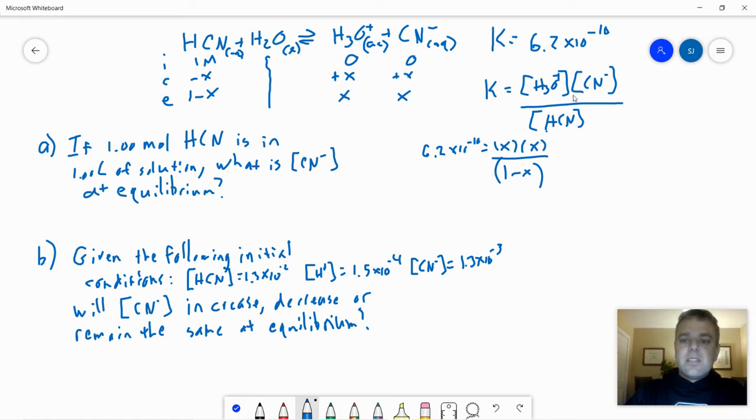So if we take a look at this, otherwise solving this equation could be a little bit complex. It would involve the quadratic equation. But since this is not going to go very far towards the product side because this constant is very small, then right here where we have 1 minus X, X is small. So 1 minus X is approximately 1 in this case.